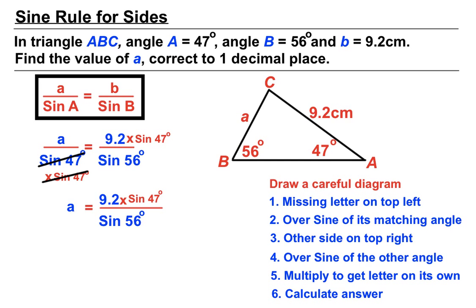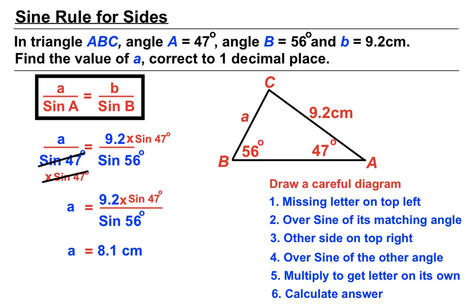Before revealing the answer, let's check what we're expecting. The angle of 56 degrees produced an opposite side of 9.2. The angle of 47 degrees should produce something a little bit shorter than that. So we're expecting an answer a little bit smaller than 9.2. And we get 8.1 — rounded to one decimal place — which makes sense when comparing the sizes of angles and their opposite sides.